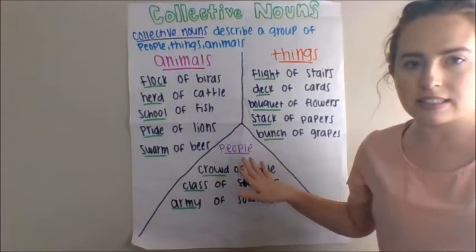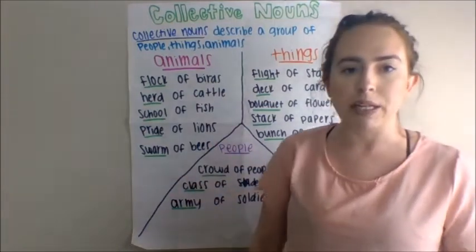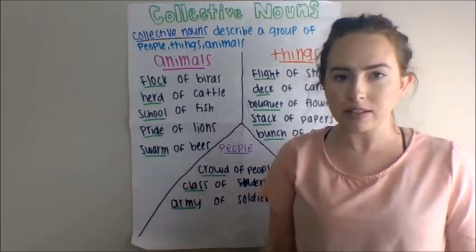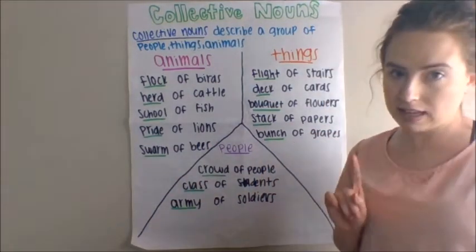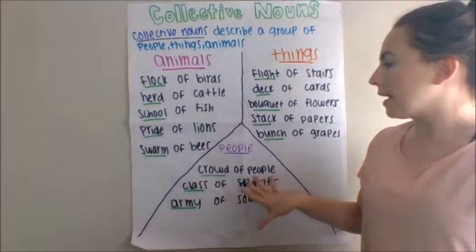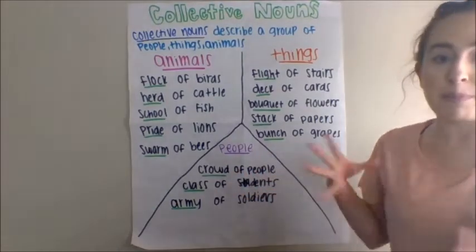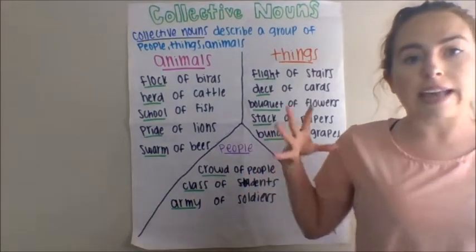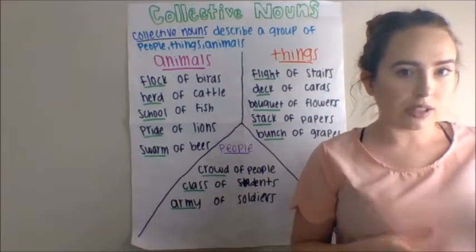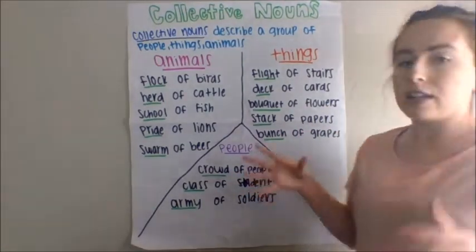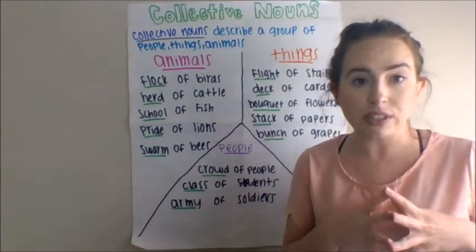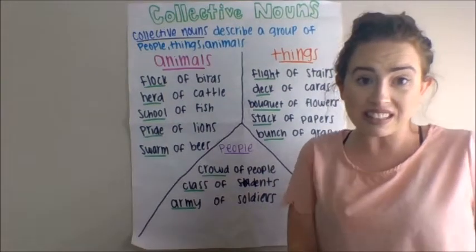And then the last section is people. There's not a whole lot of these, but there are some. So a group of people you'd call a crowd of people, and then a group of students you'd call a class.